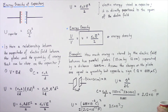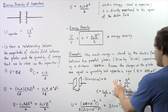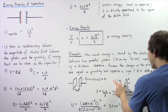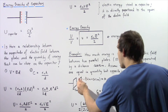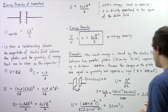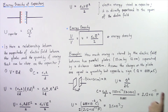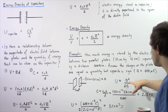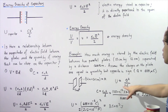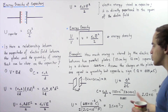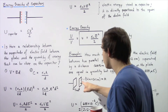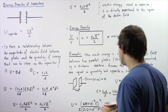We see that the electric energy stored within our electric field between our parallel plate capacitors is equal to Q squared divided by 2C, where Q is the quantity of charge stored on either one of these plates.